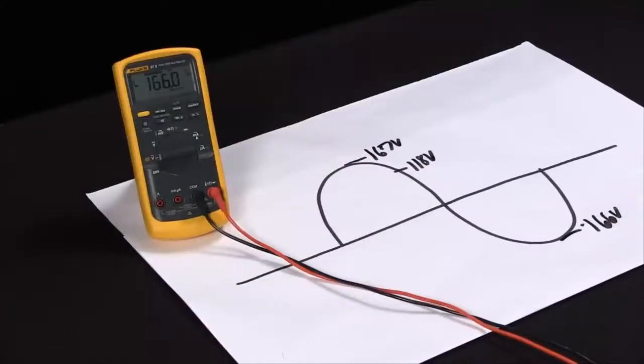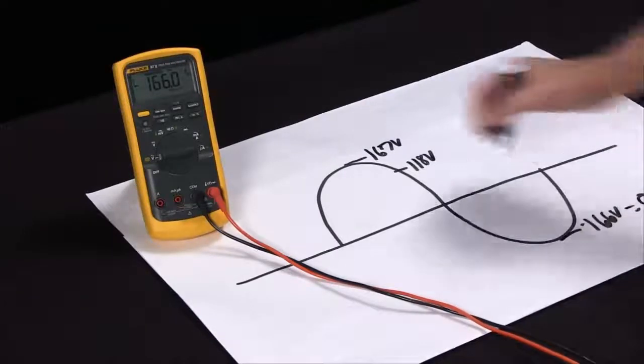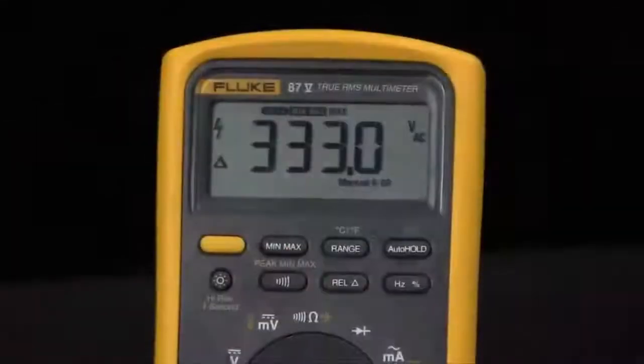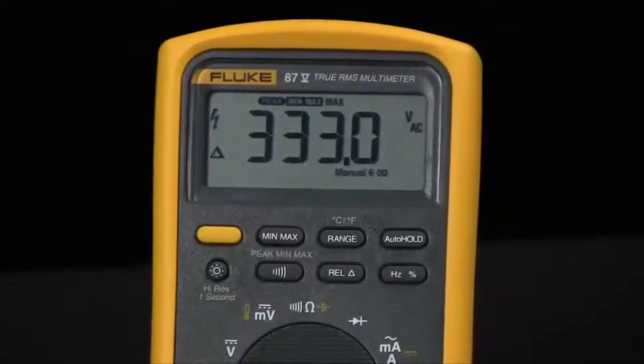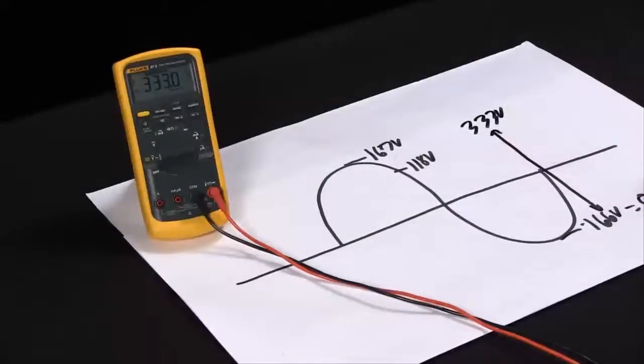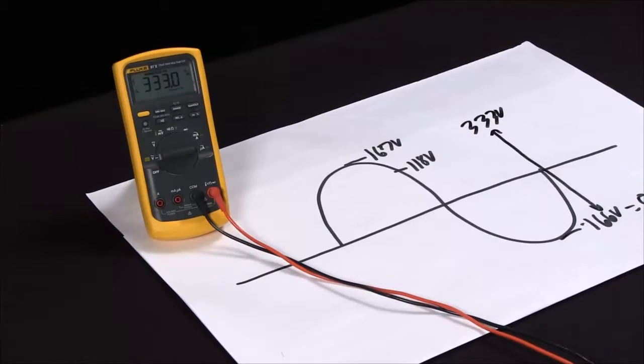Where the relative mode comes in is I can now make this negative a zero. So if I hit relative that becomes zero and now I'm measuring the peak to peak of 330 volts of this sine wave by using a combination of the fast min max and the relative mode.